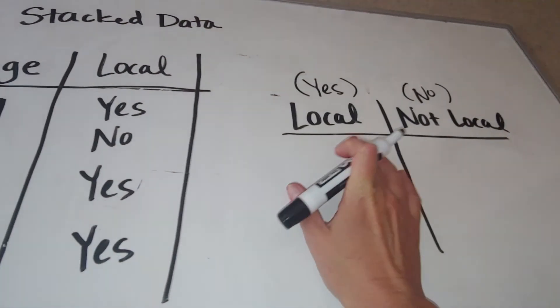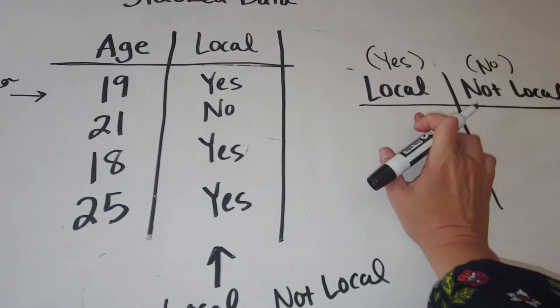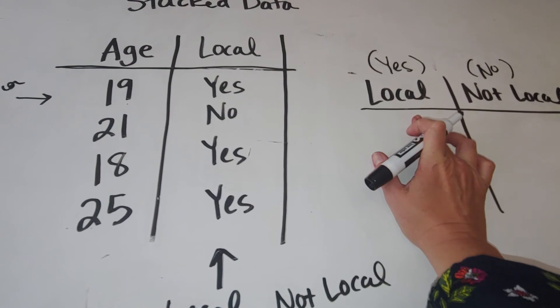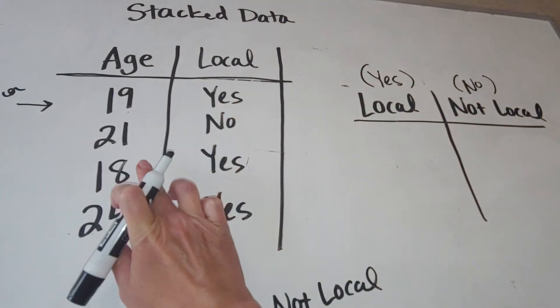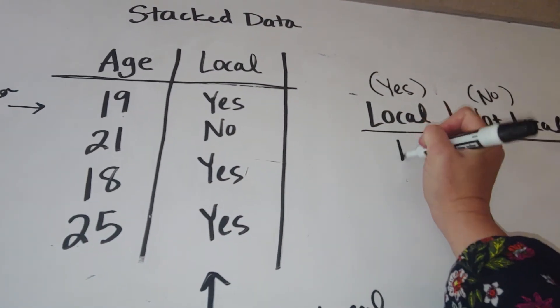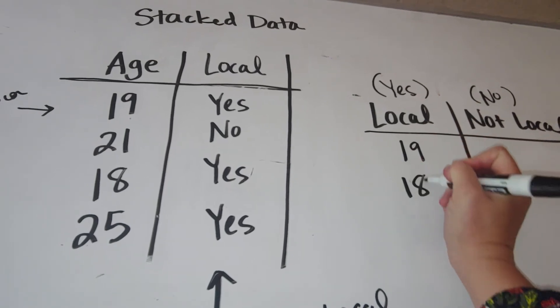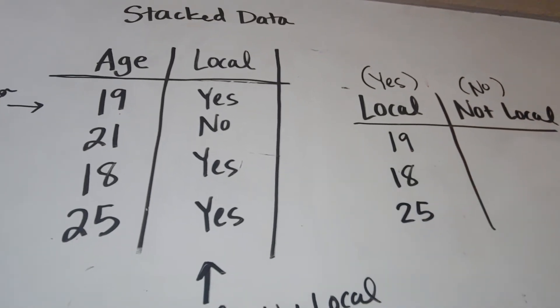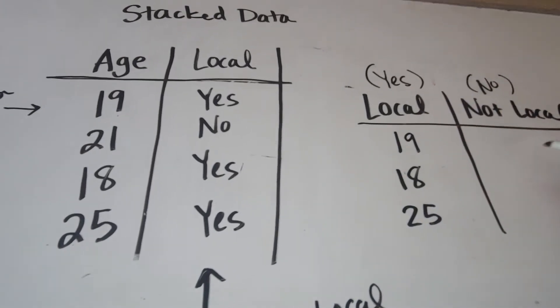And then what we do is we write down the responses of everybody who said they were local. So the locals were a 19-year-old, an 18-year-old, and a 25-year-old. My not local was a 21-year-old.